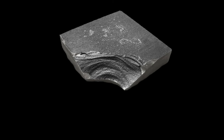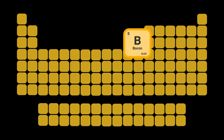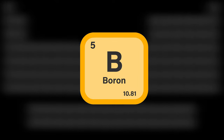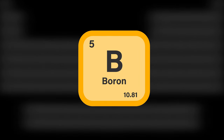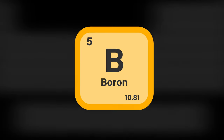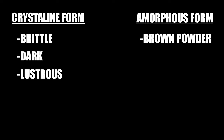This is boron. Boron has the symbol B and its atomic number is 5. Therefore all atoms of boron have 5 protons and 5 electrons. In its crystalline form it is brittle, dark and lustrous. In its amorphous form it is a brown powder.